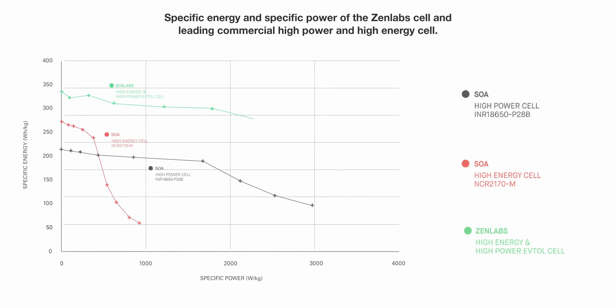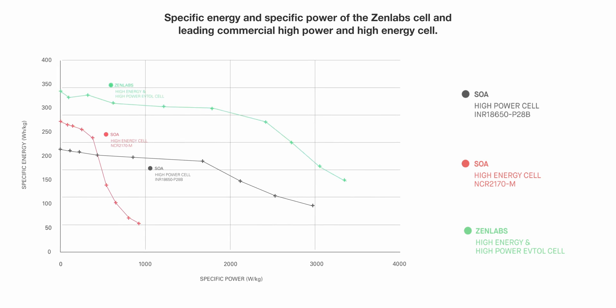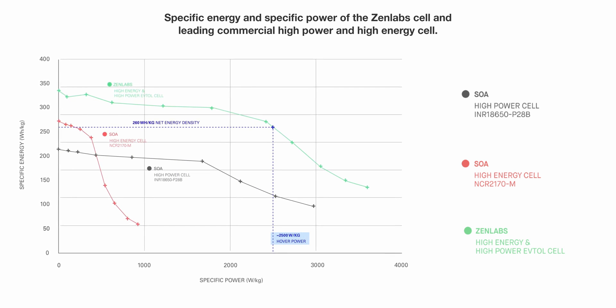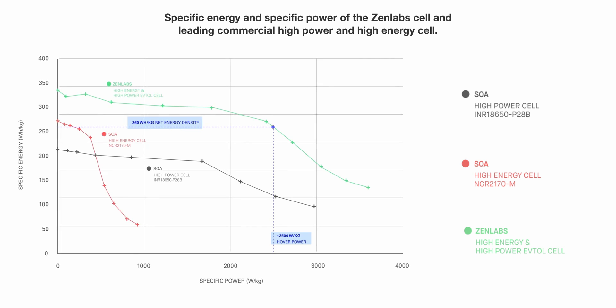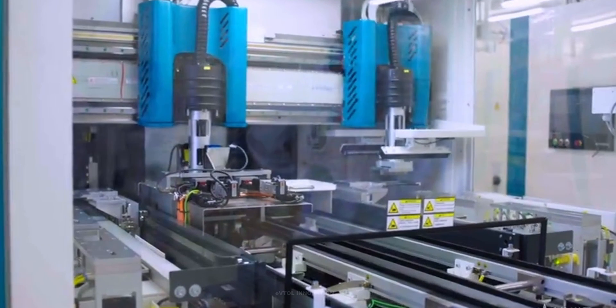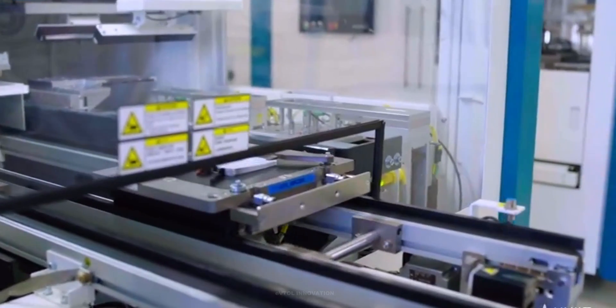The advantage of the Zenlabs cell is its combination of both superior specific energy and specific power capabilities. The Lilium cell surpasses both the specific power capability of the high-power cell and the specific energy capability of the high-energy cell. These impressive performance results were validated by a third-party testing laboratory.